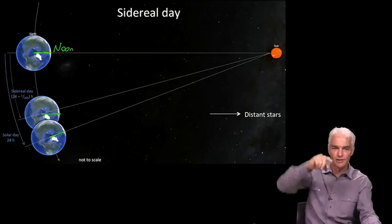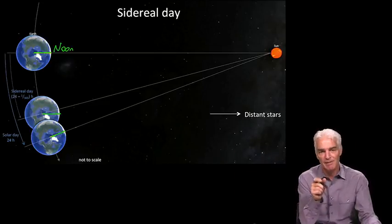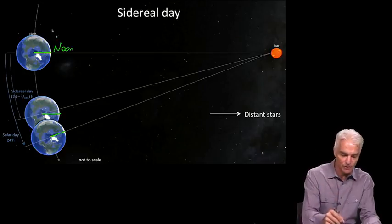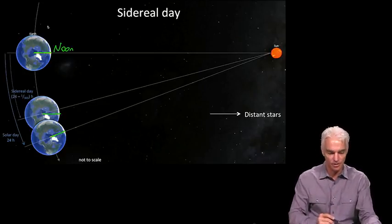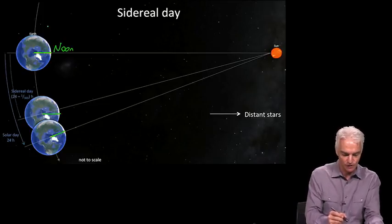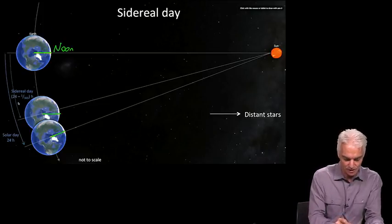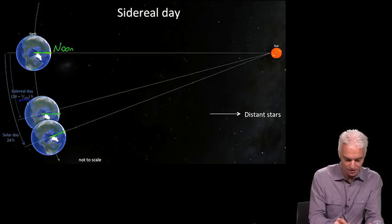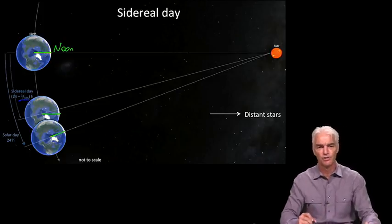So the amount extra that it has to rotate times 365 gives us one whole extra rotation, and so from that we can infer that a sidereal day is that much less than a solar day, 1/365th.